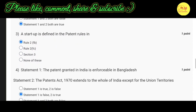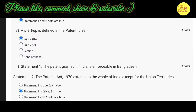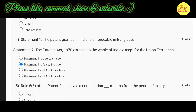Our third question is: The startup is defined in the patent rules in — the correct option is A — Rule 2(fb). Our fourth question is: Statement 1 — The patent granted in India is enforceable in Bangladesh. Statement 2 — The Patents Act 1970 extends to the whole of India except for the union territories. The correct option is B — Statement 1 is false but Statement 2 is true.